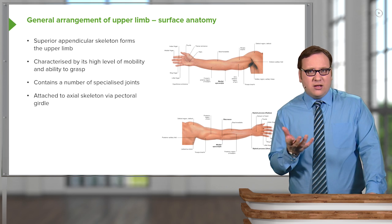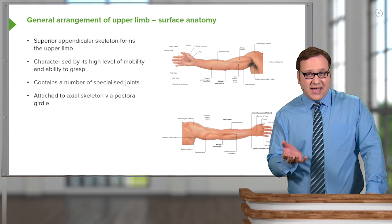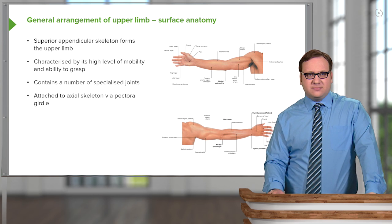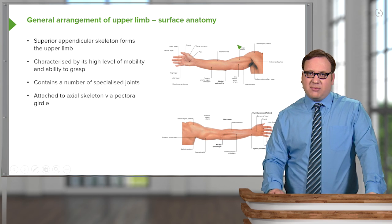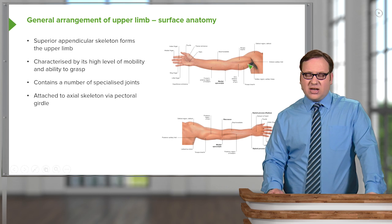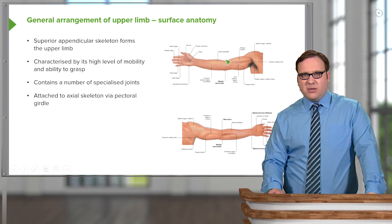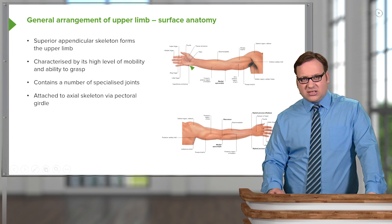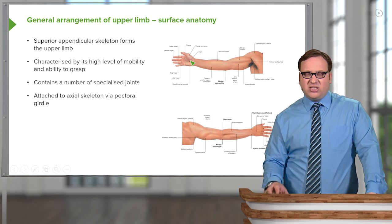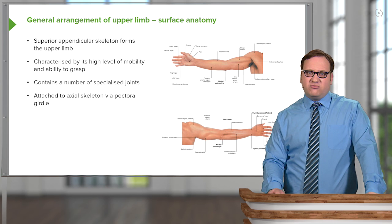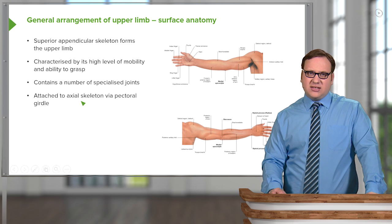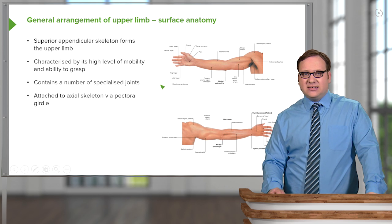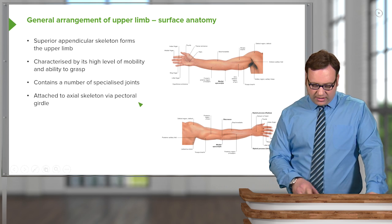So the upper limb is more prone to having dislocated shoulder joints. There's a whole series of specialised joints in the upper limb — the shoulder joint, the elbow joint, and various joints most distally are very specialised, allowing for this increased range of movement. The axial skeleton is connected to this appendicular skeleton via the pectoral girdle.